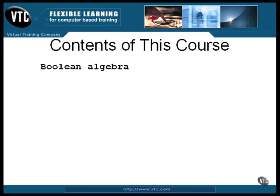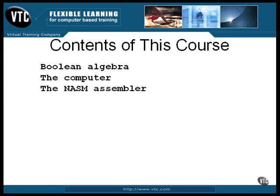I've already mentioned Boolean algebra, and that's what the course starts with. The next thing covered is the computer as seen from its inside — you need to understand the CPU, the registers, and how memory is addressed. Then the NASM assembler is explained; it is freely downloadable and is used for all the examples shown in this course. Then the course takes a look at the construction of a program, including the details involved with a single instruction and the overall construction of a program. This is the largest section of the course and is filled with a number of examples.